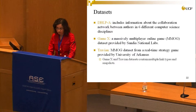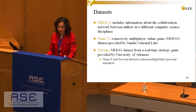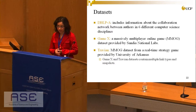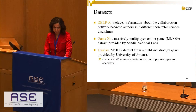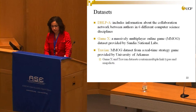The DBLP dataset used to compare with our first generator includes a collaboration network between authors in six different computer science disciplines. The GameX dataset shows relationships between players in a massively multiplayer online game, provided by Sandia National Labs. We also used the Travian dataset, provided by the University of Arkansas. Both GameX and Travian have two different kinds of links — message and attack links — and multiple snapshots; since our work is static, we use only some of their snapshots.